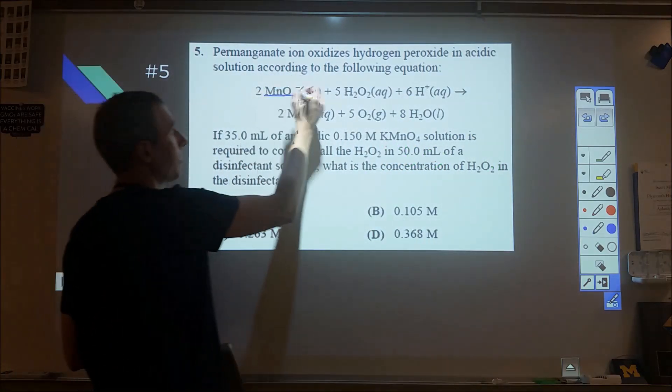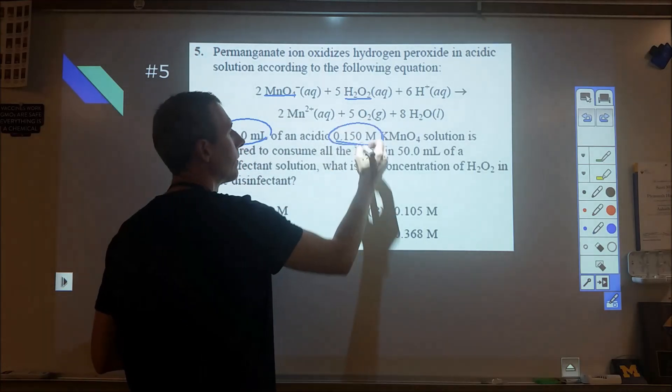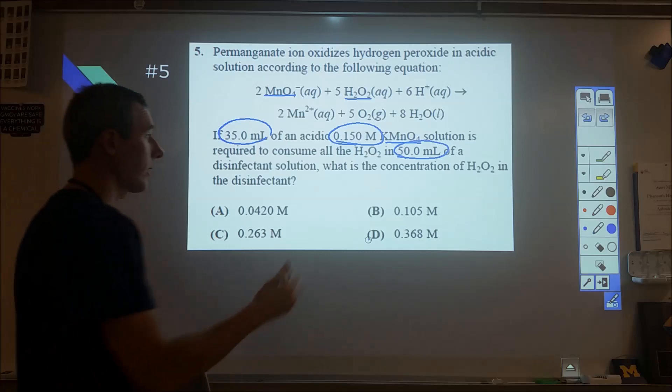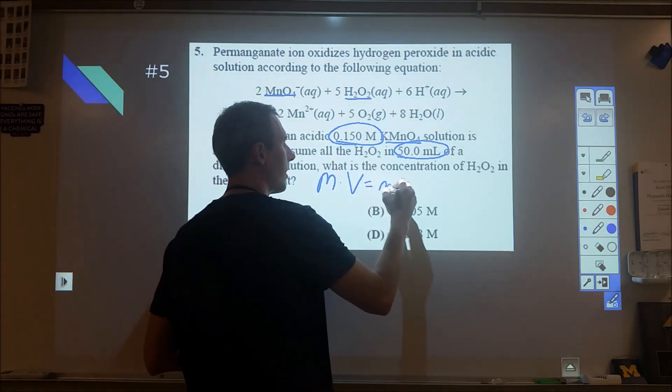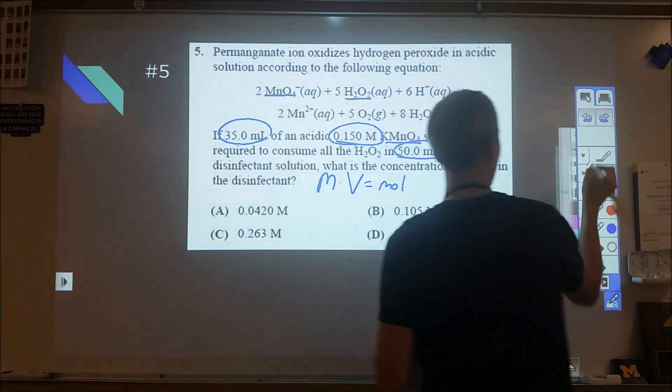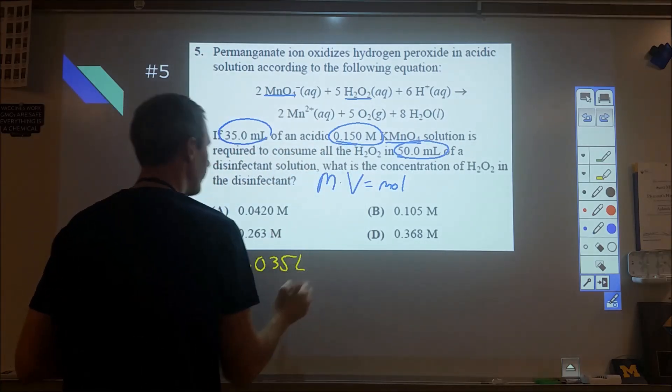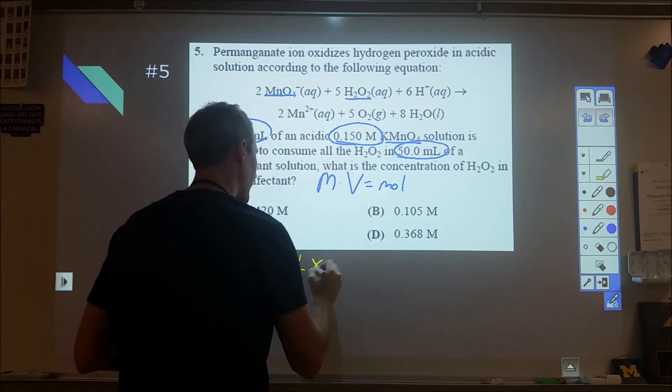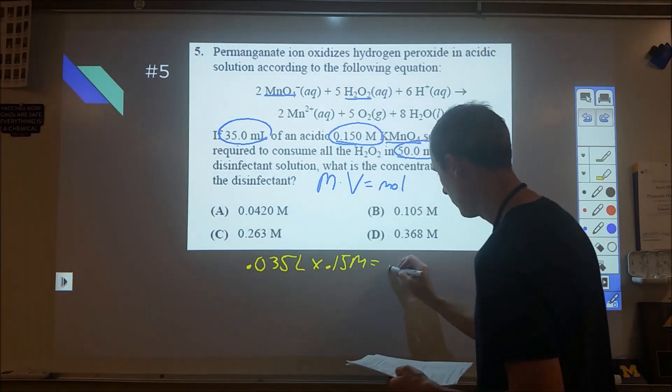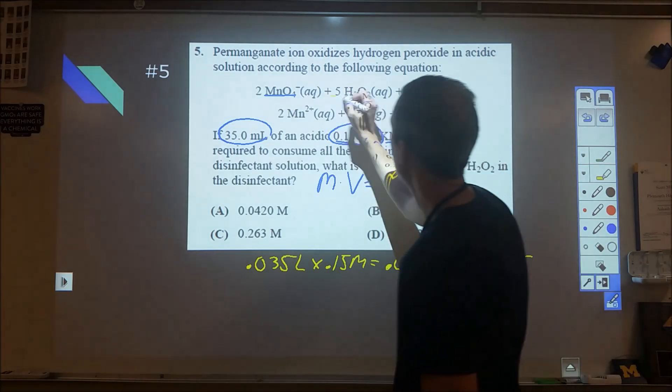Here we have a redox titration. Permanganate reacting with peroxide under acidic conditions. 35 milliliters, 0.15 molar KMnO4, and 50 milliliters of unknown concentration peroxide. The critical calculation is molarity times volume equals moles. 35 milliliters is 0.035 liters times 0.15 molar gives us 0.00525 moles of permanganate.